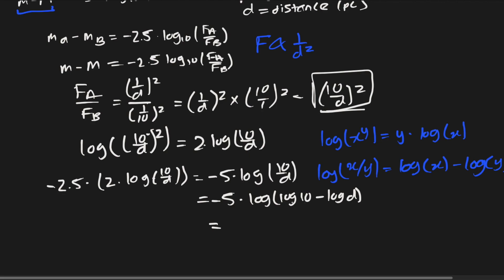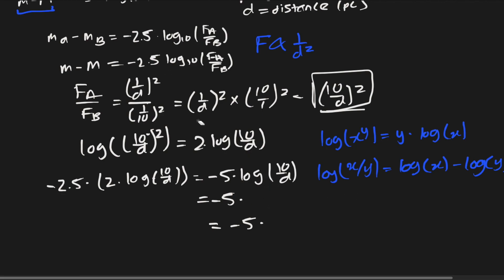Now, log base 10 of 10 is 1, so we get negative 5 times the quantity 1 minus log d.